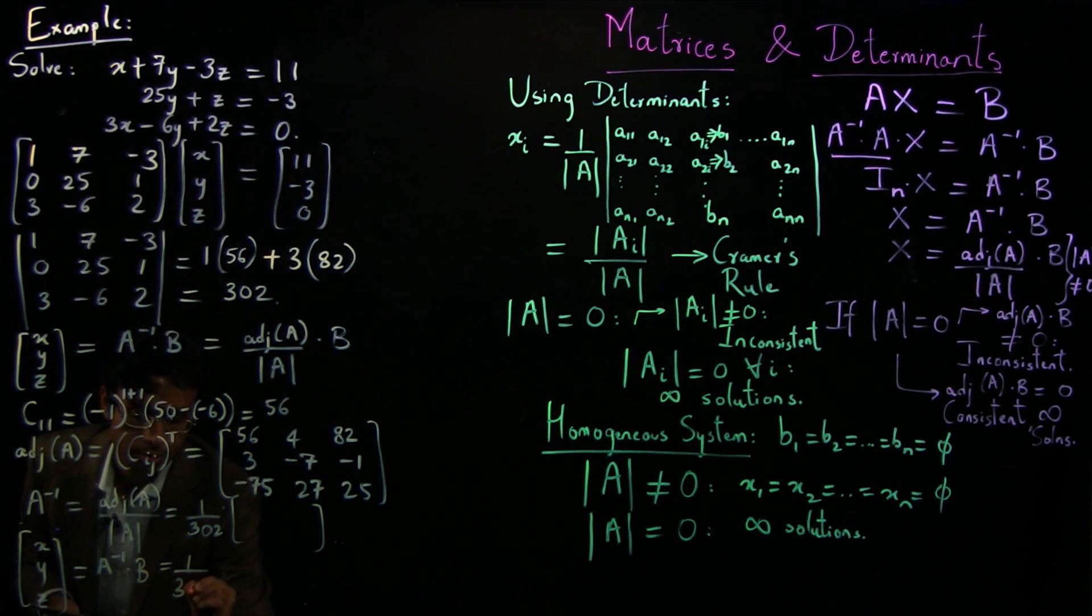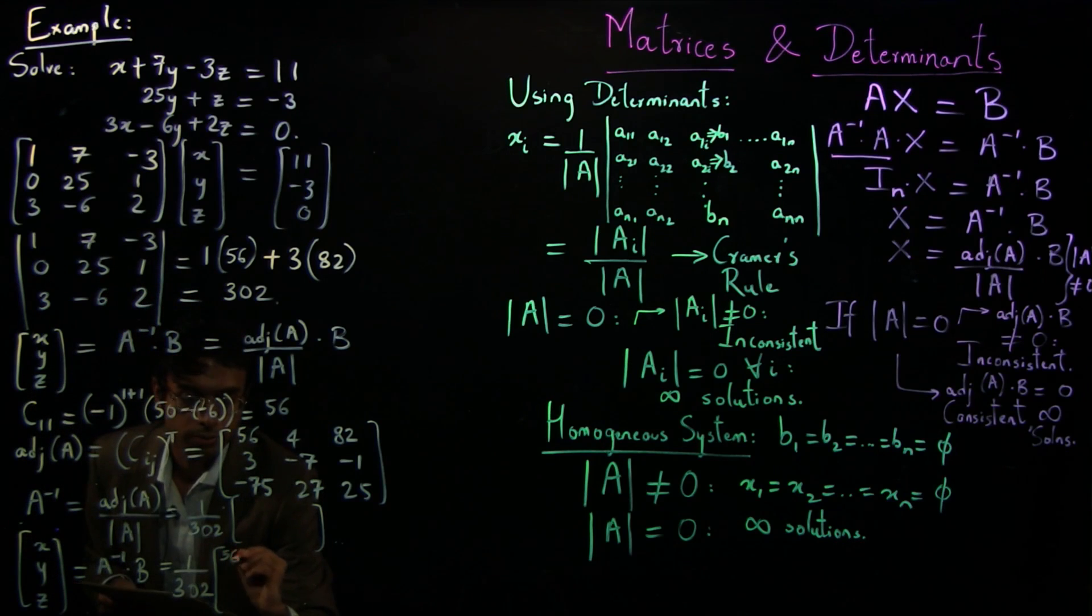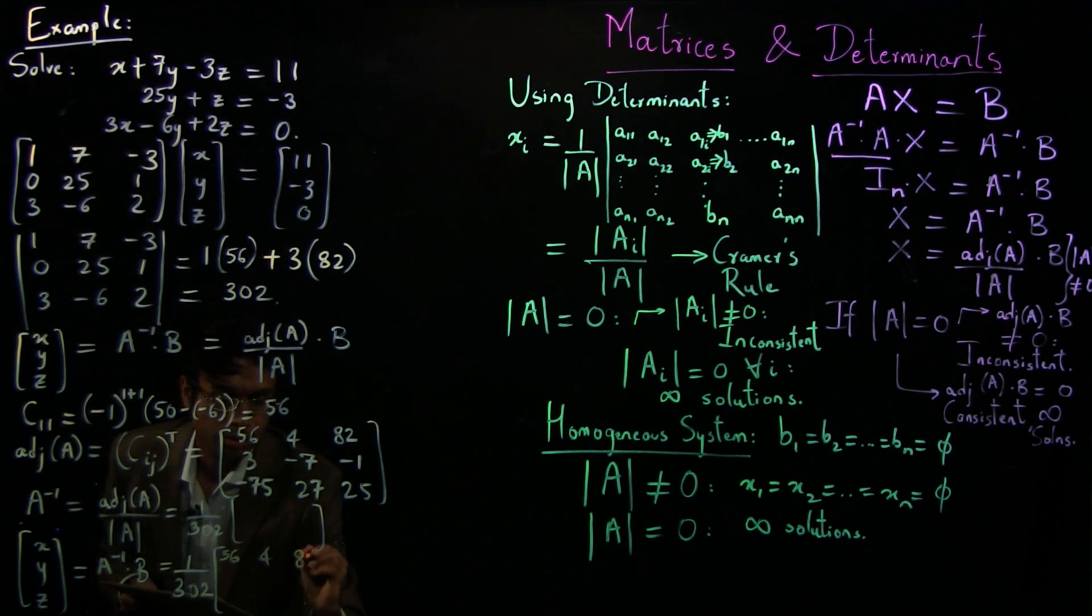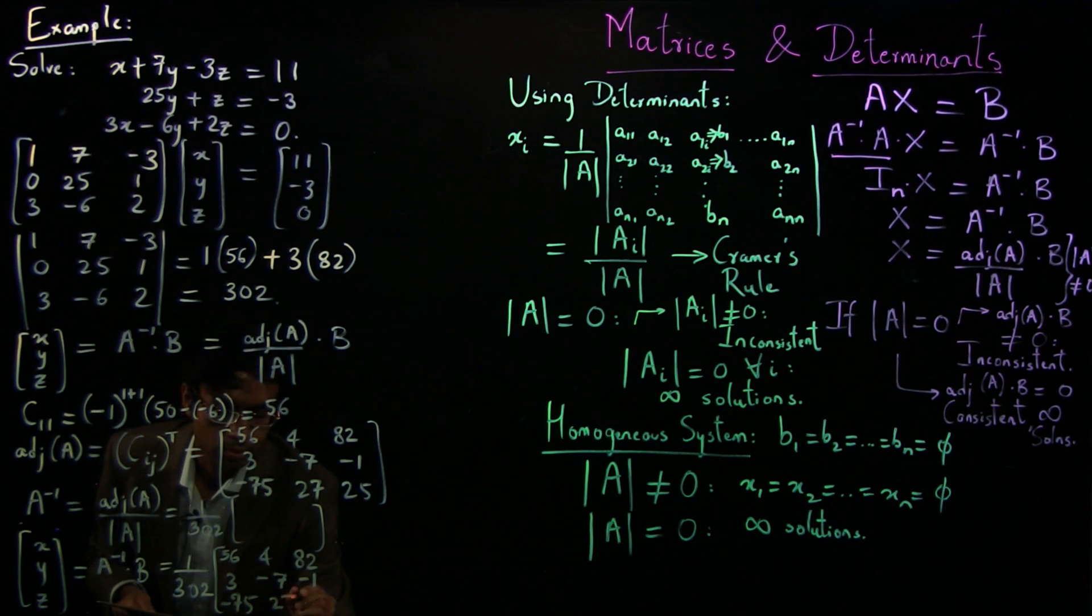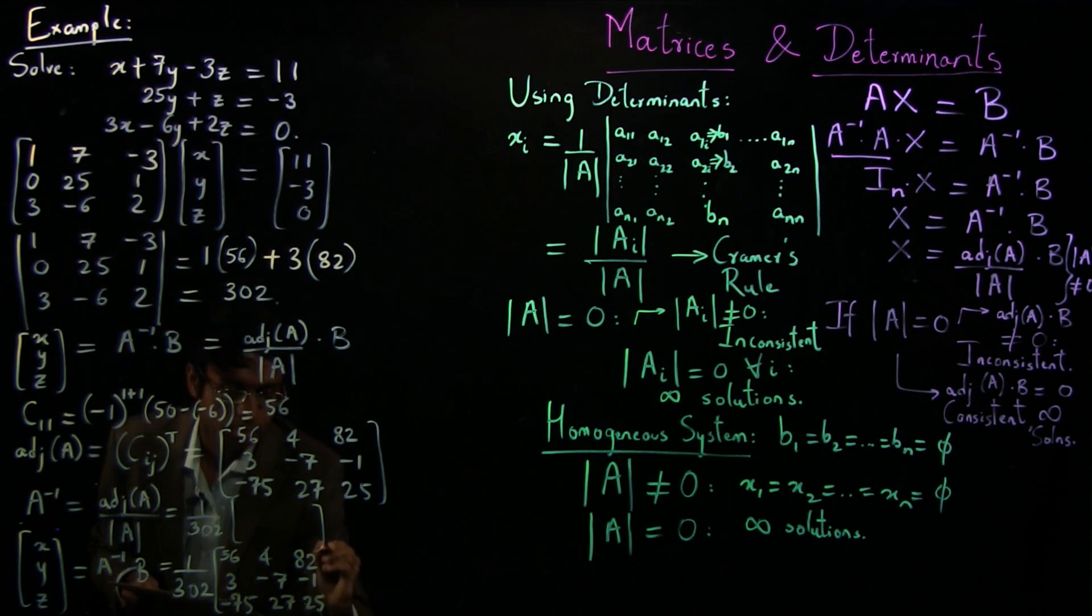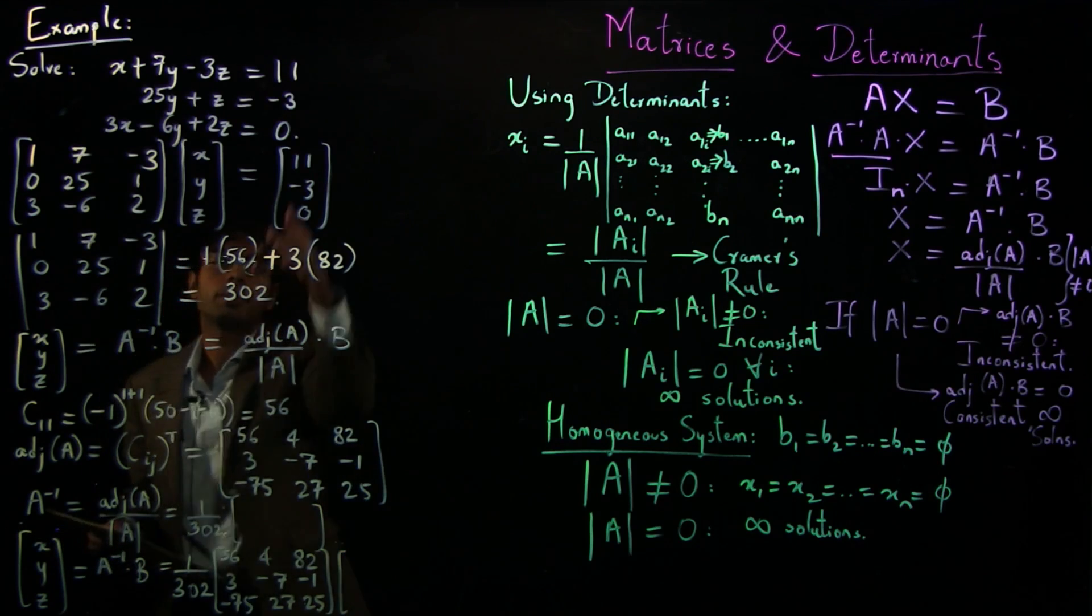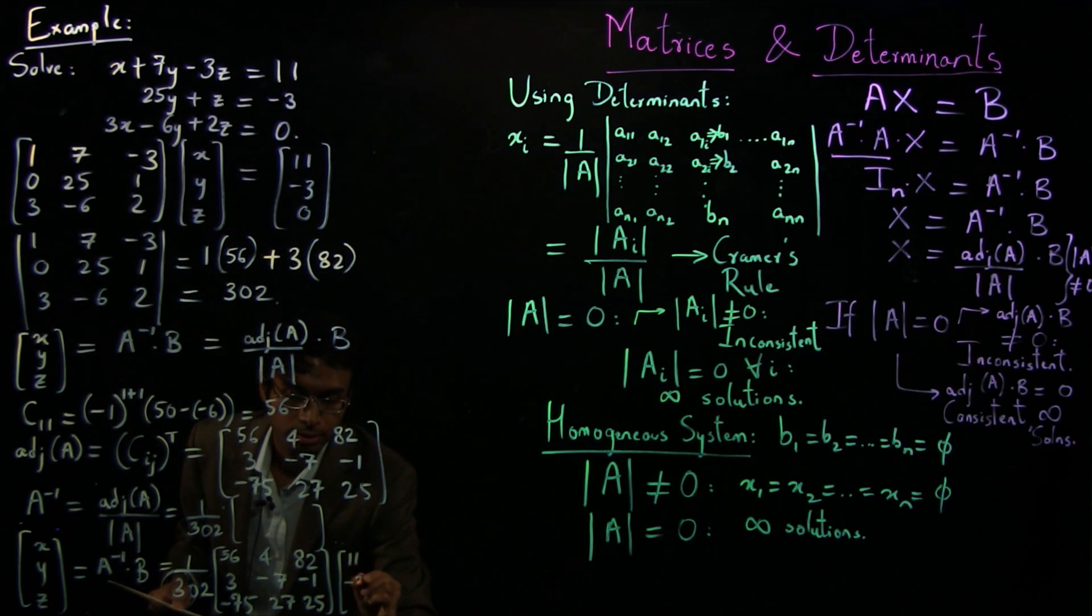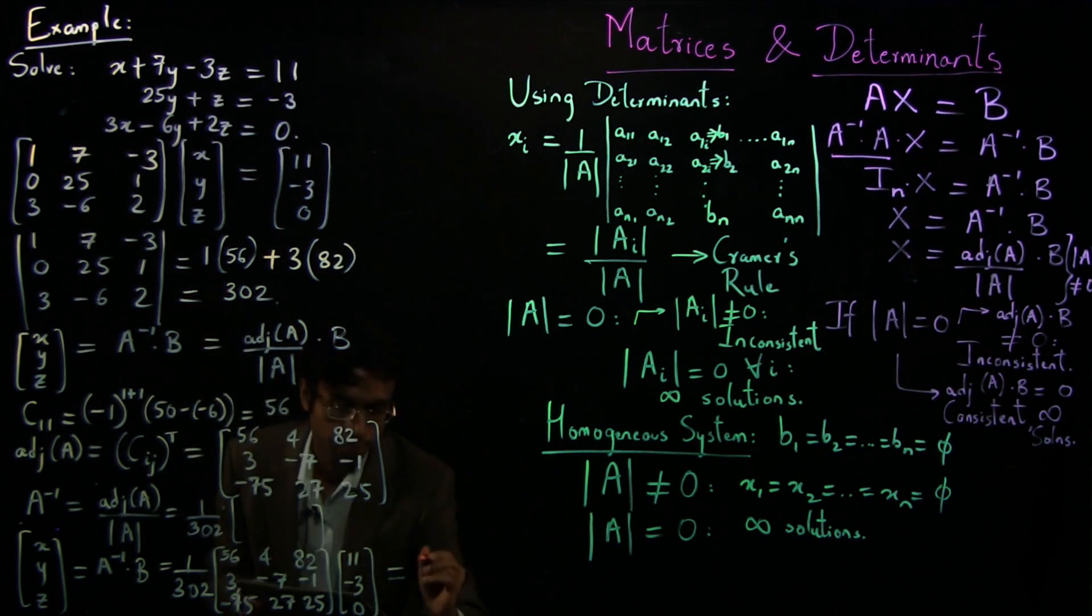Well, I'll write it here. 1 over 302 times 56, 4, 82, 3, minus 7, minus 1, minus 75, 27, 25 times your right-hand side matrix, which is 11, minus 3, 0. And you can do this calculation. And it works out to be, let's still keep this outside, 1 over 302. And first do the multiplications here.